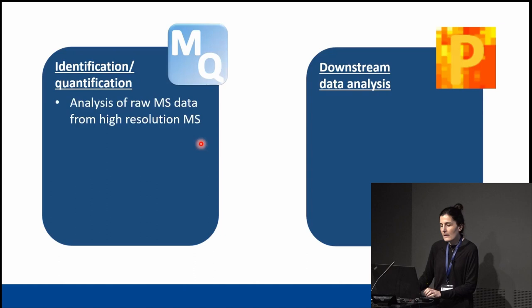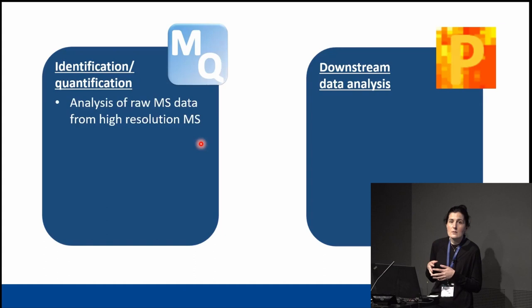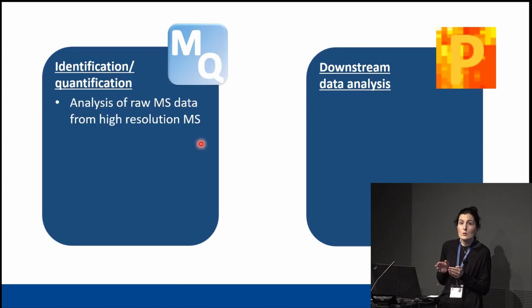For example, you have your sample and you run it through the mass spectrometer. The mass spectrometer will give you some files that have all the spectra. You then use these raw files to analyze them with proteomic software. MaxQuant is one of the softwares you can use — you put these raw files as input and MaxQuant will do everything.